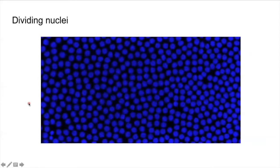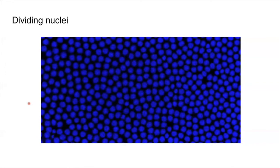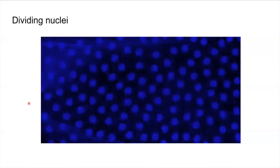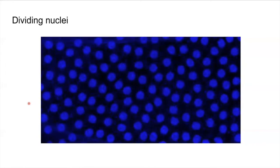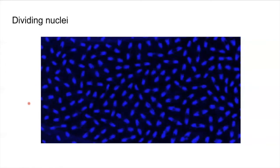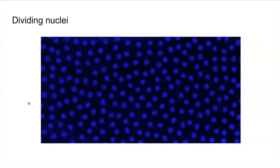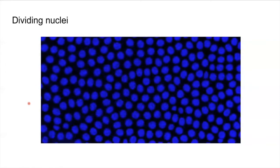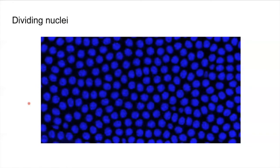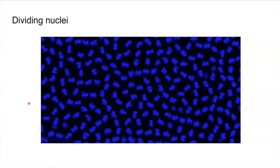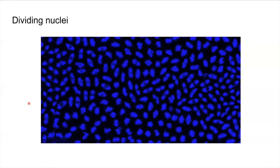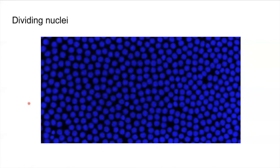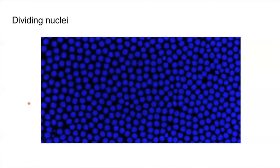This is a fluorescence movie that was created by the confocal microscope. It is a zoomed in portion of the surface of the embryo. The blue you see is fluorescence from fluorescent proteins inside the nuclei. This movie shows the process of nuclear division.